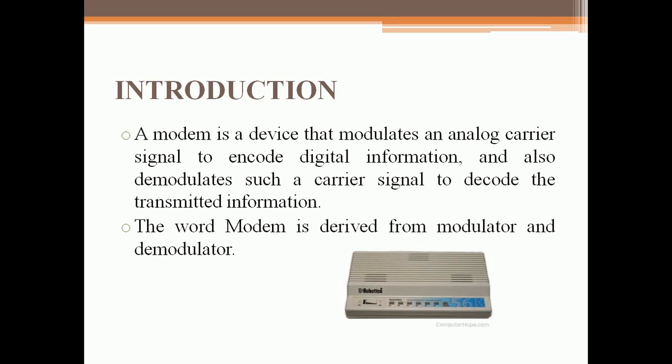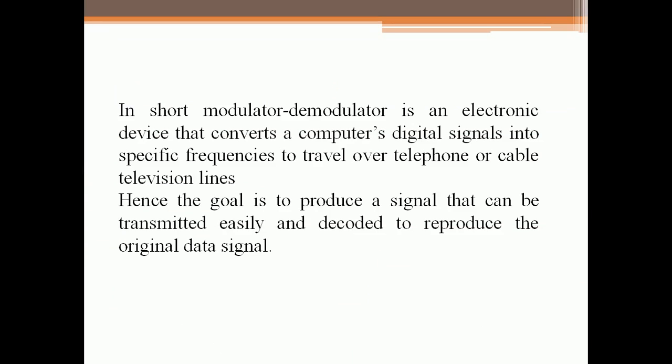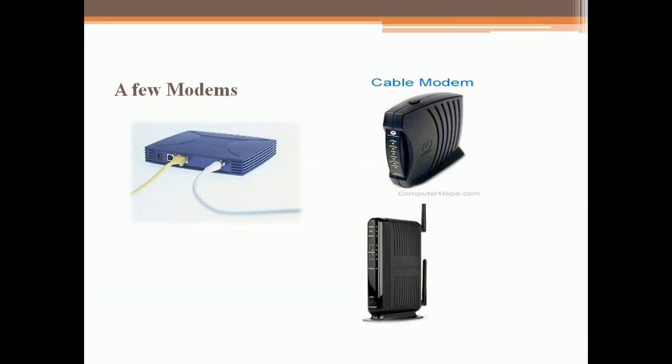Modem modulates and demodulates the signal to encode or decode the digital information. For example it works in telephone lines and radios. Hence the goal is to produce a signal that can be transmitted easily and decoded reliably to reproduce the original digital signal. Here are a few images of modem, you can see a cable modem.